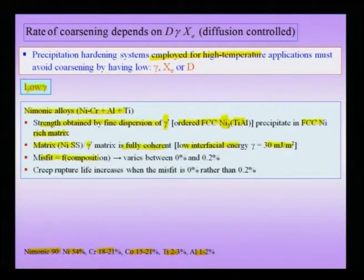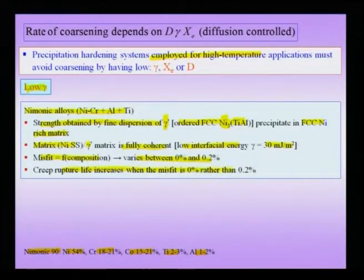This alloy can be used as a precipitation-hardened alloy at high temperatures. The misfit between matrix and precipitate varies between 0% and 2% and is a function of composition. A large misfit implies coherency stresses, and the creep rupture life actually increases when the misfit is small. Low interfacial energy combined with low misfit gives better high-temperature properties, confirming that the main strategy is keeping γ low.